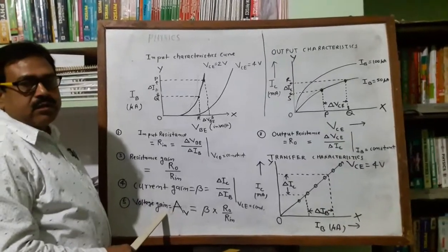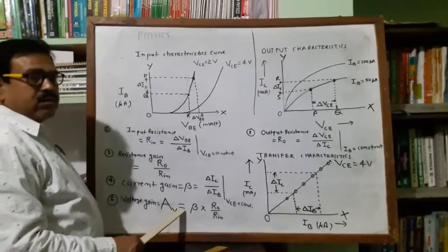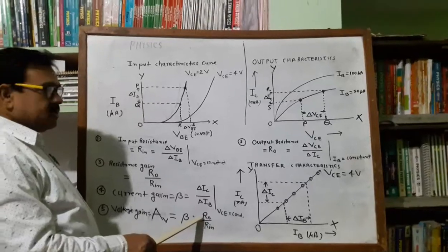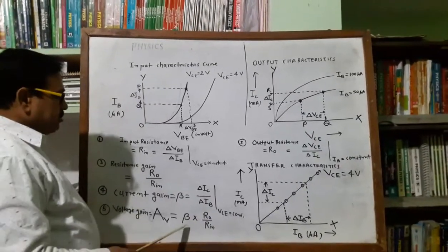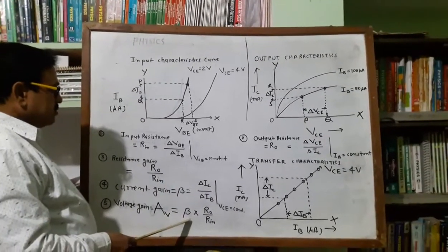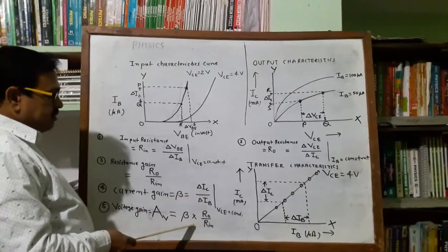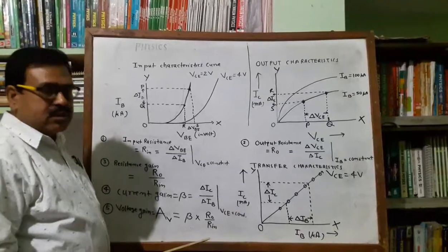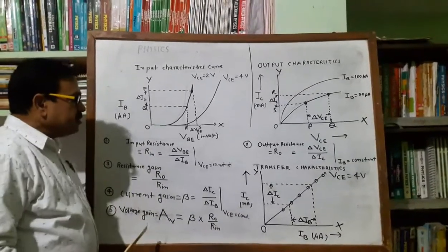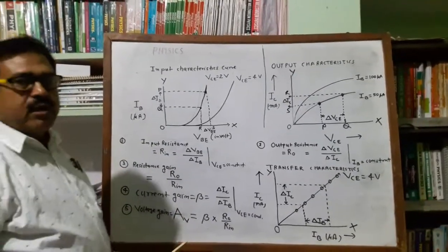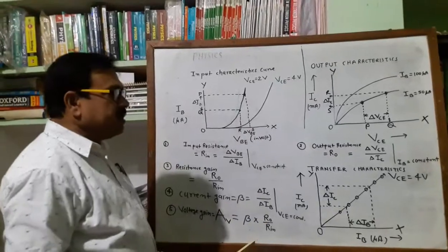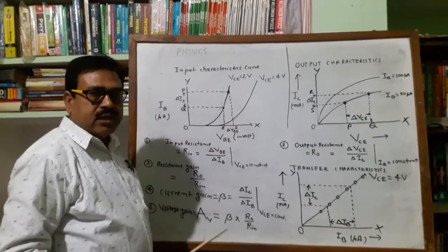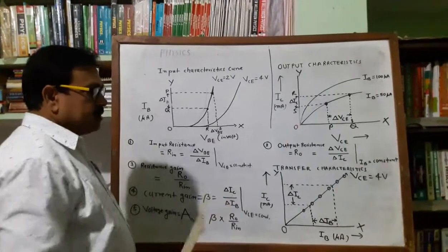The voltage gain, A_v, is equal to the current gain times the resistance gain. Beta is the current gain, which is delta I_C divided by delta I_B, and resistance gain is the output resistance divided by the input resistance. With the help of this, we can easily calculate the results for the PNP as well as the NPN transistor. Thank you.